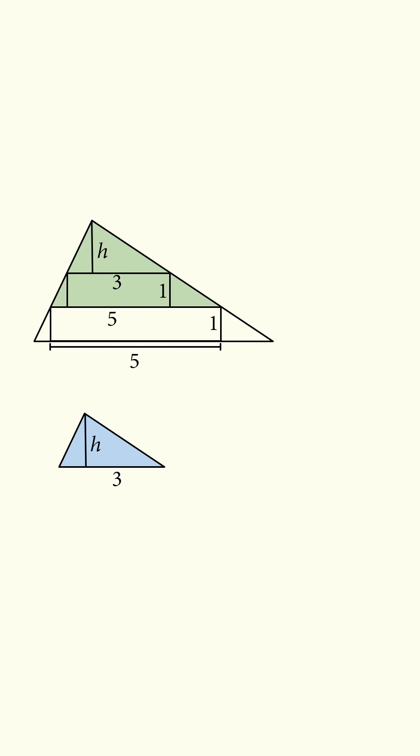Now we know its base is equal to 5, and let's label this length, and that will be equal to 1. So this triangle has a base of 5 and a height of h plus 1.